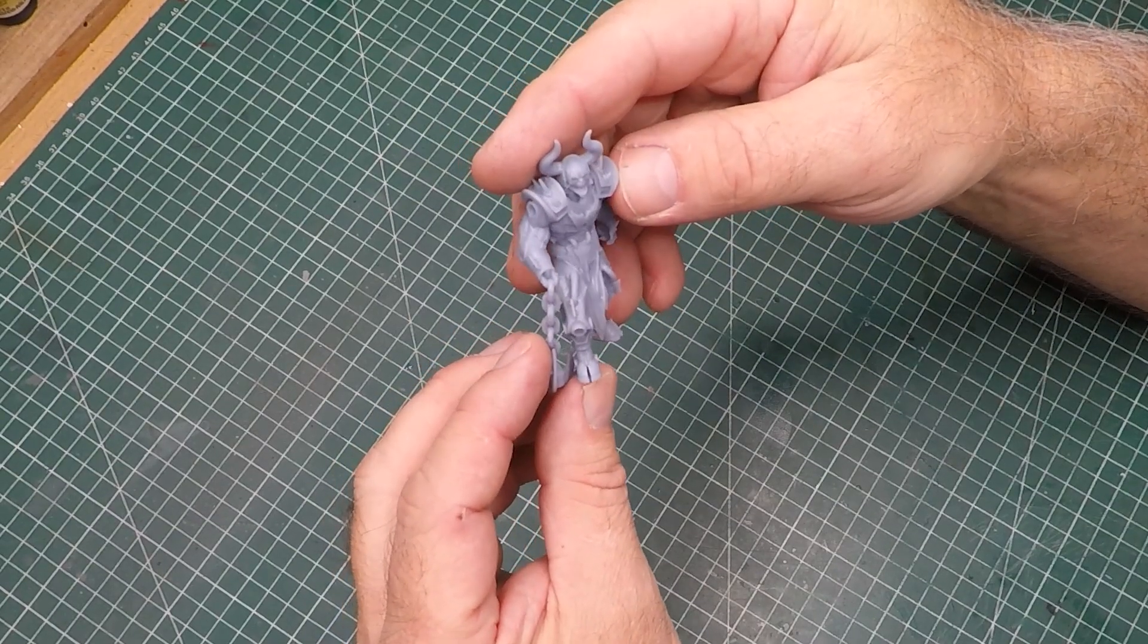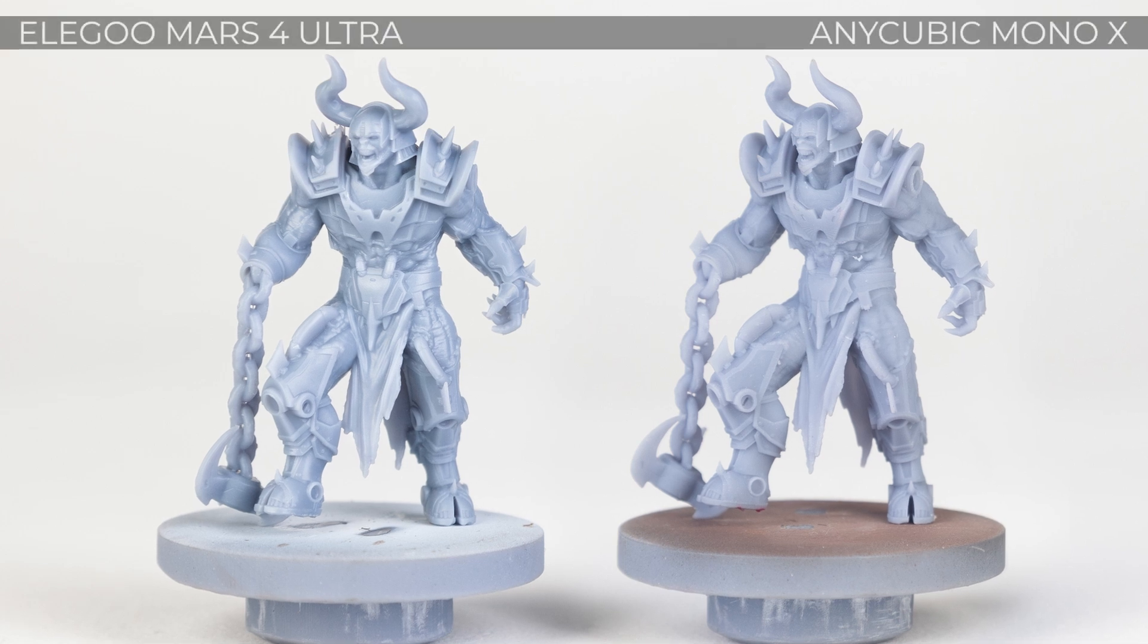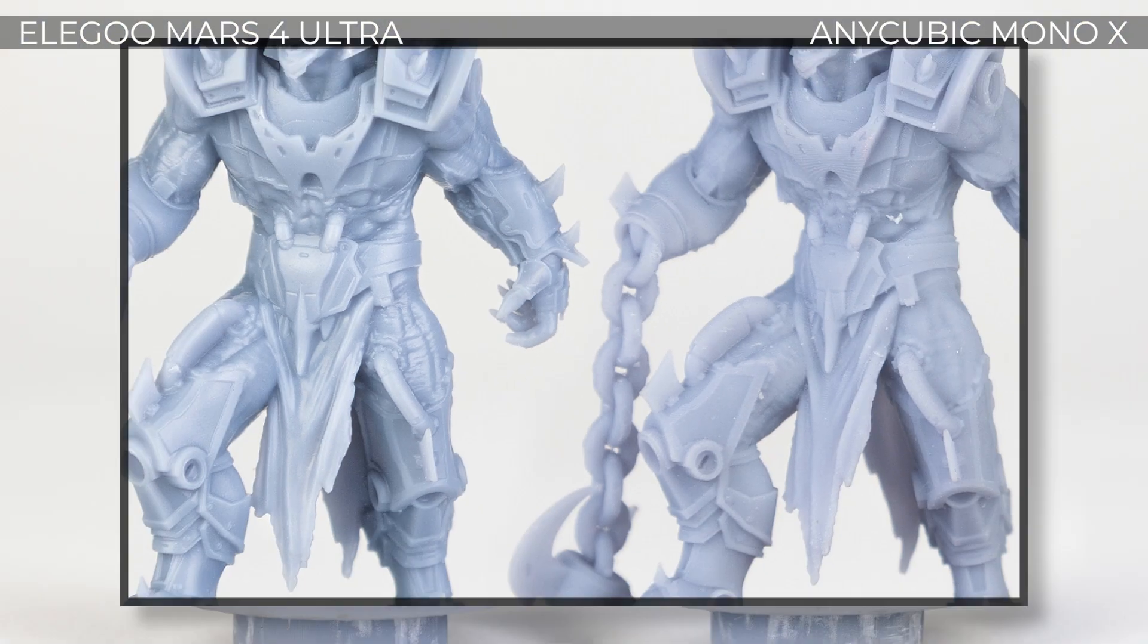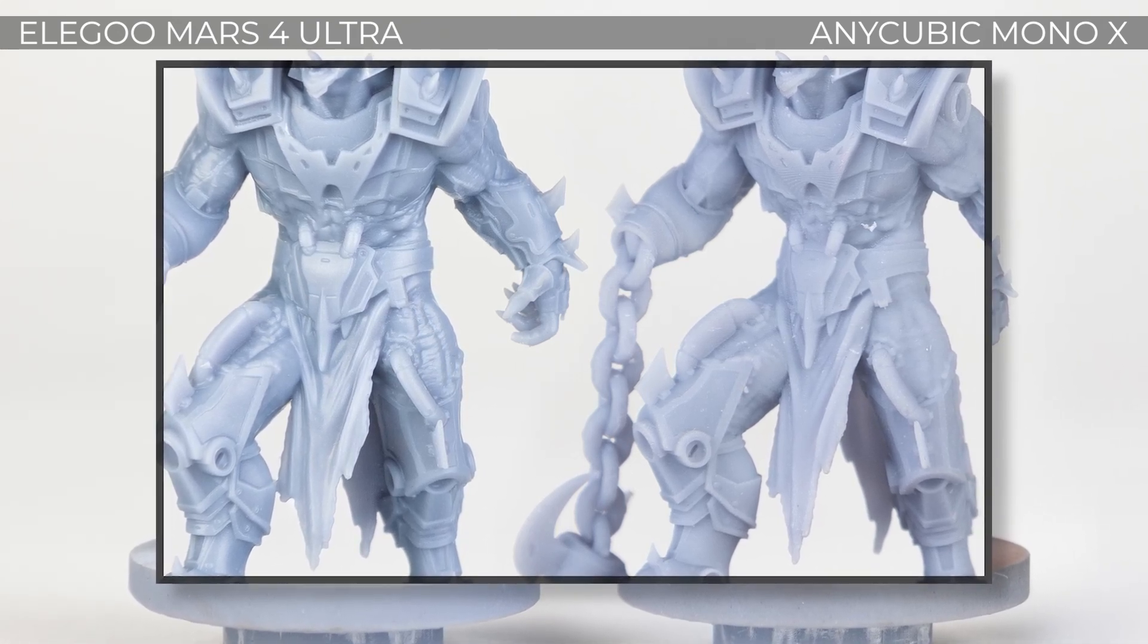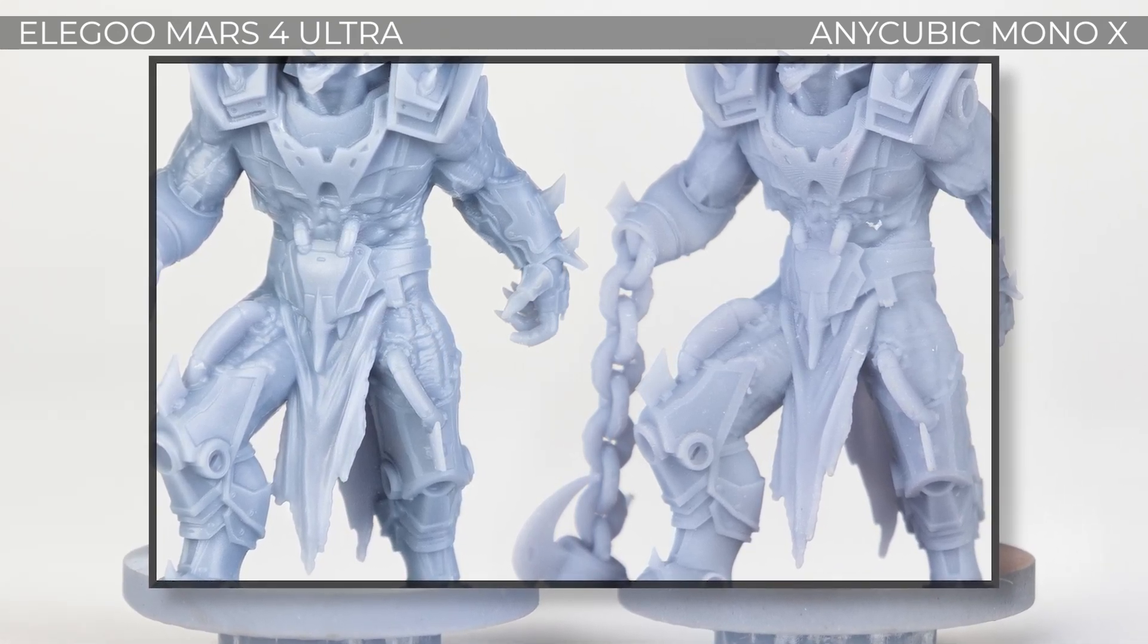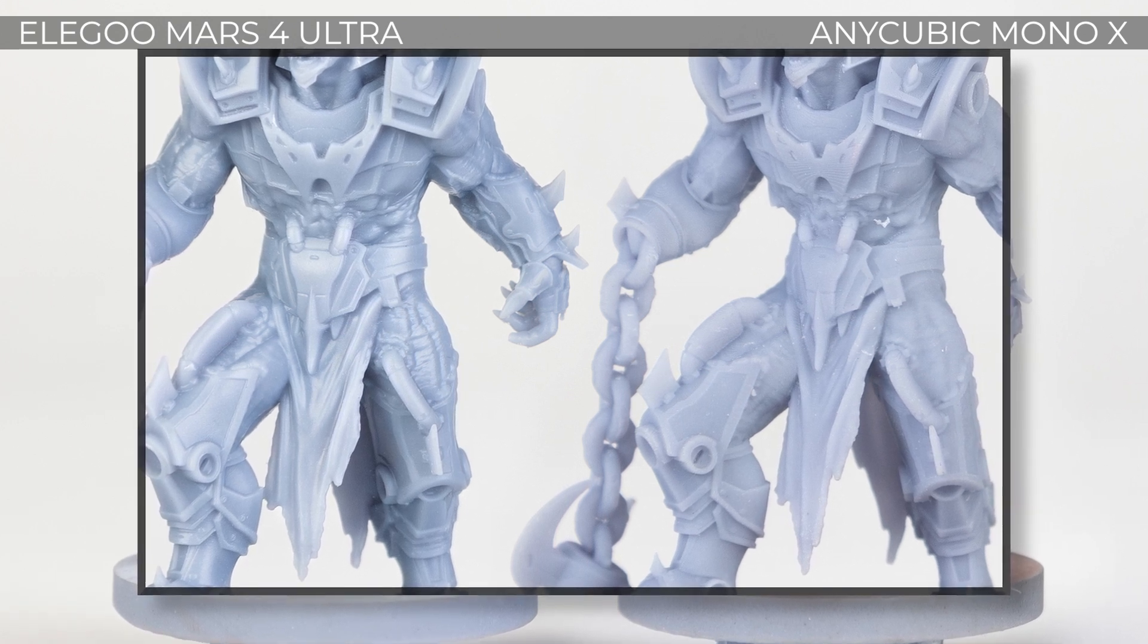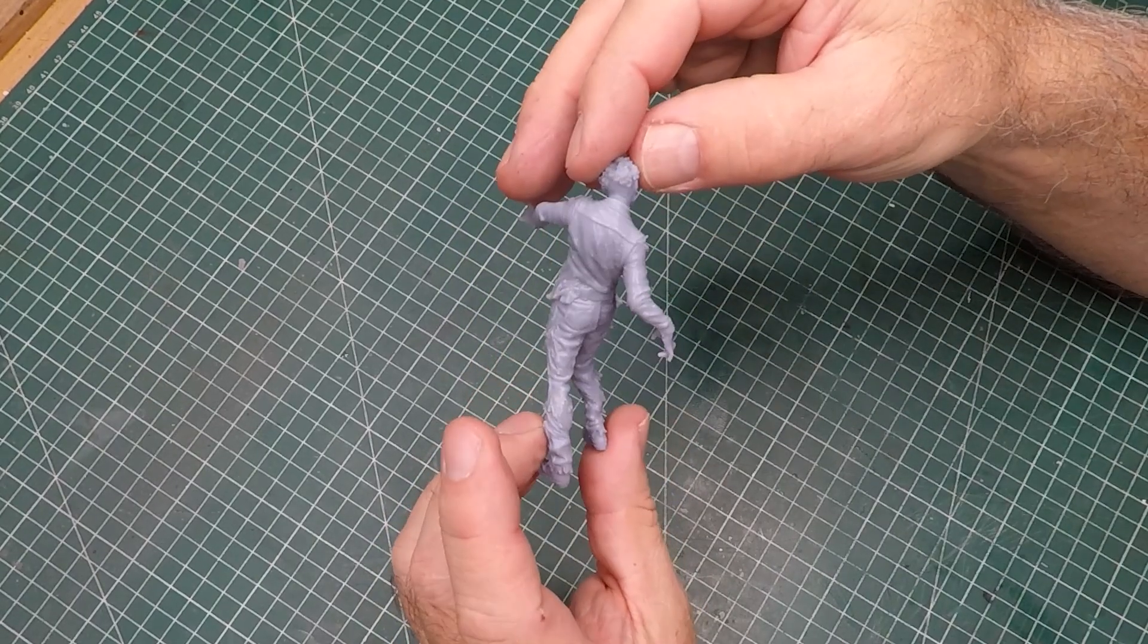Next I wanted to test how much detail could get out of the print so I use this figure from Loot which has a lot of fine detail and it was a six hour print. Check out the detail between the two - the Elegoo on the left is so much crisper and cleaner as well as no print lines. This is the benefits of having 9K on a smaller screen because the pixels are smaller so your details are really sharp and crisp.